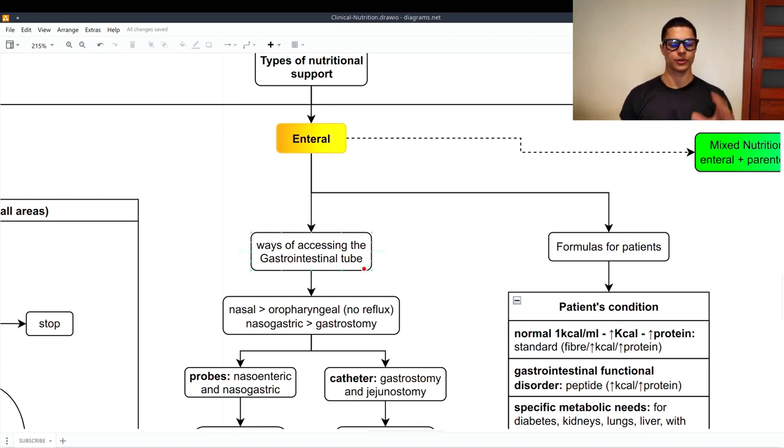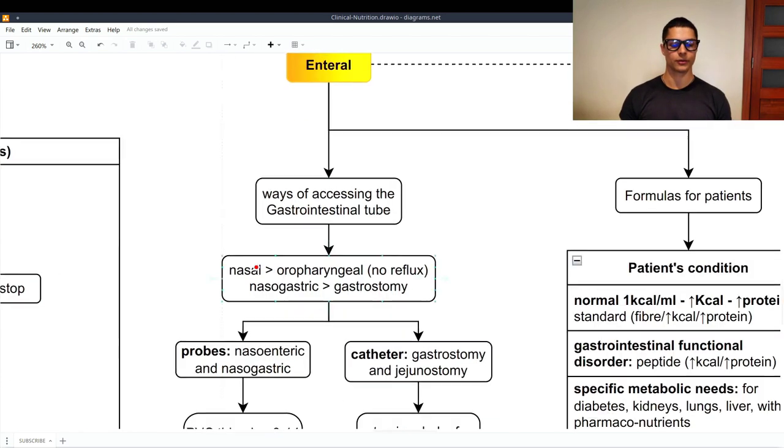Ways of accessing the gastrointestinal tube. We say that the nasal, so through the nose, is always better than through the mouth because in the oropharyngeal way we have the reflux. In the nasal we don't have the reflux. So nasogastric also is always better than gastrostomy because it's easier to adapt, it's less invasive and it just functions better. And the majority of the times we're going to prefer the nasogastric than the gastrostomy even because the gastrostomy is for a longer term.